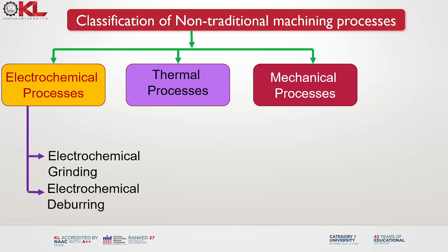The next classification of electrochemical processes is electrochemical machining. Electrochemical machining is a non-traditional machining process that uses the principle of electrochemistry to remove material from a workpiece. It is particularly suitable for machining complex shapes, hard-to-machine materials and delicate components with high precision and accuracy.